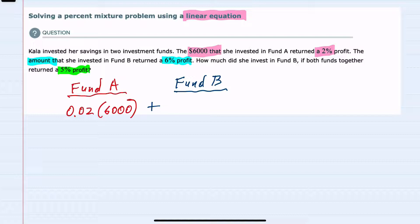which we don't know how much she invests, but her return is 6% here. So 0.06 times the amount she invested, which is unknown. We'll call that X. When we add her return from Fund A and her return from Fund B,